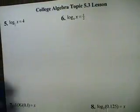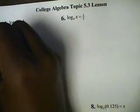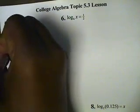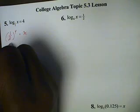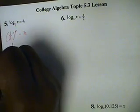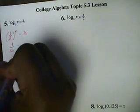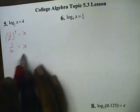Okay, number five. So converting this, this will be a base of one-half raised to the fourth power equals x. Raising this to the fourth power, we get one-half times one-half times one-half times one-half, which is one over sixteen. And that finishes the problem.